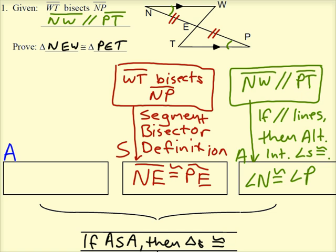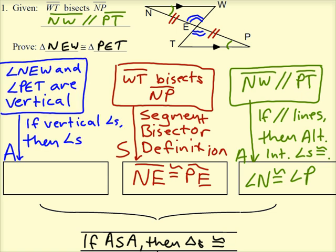And then finally, we had our vertical angles. And those come from the fact that we have intersecting lines because of the way that this particular figure is drawn. So those vertical angles are always congruent, which means angle NEW is congruent to angle PET.